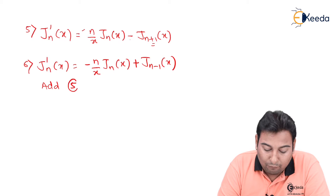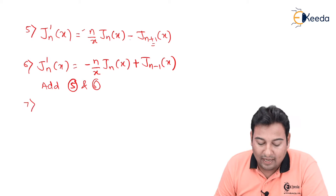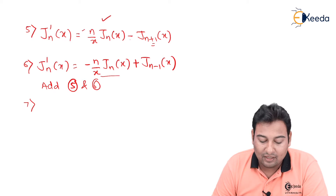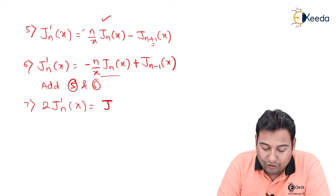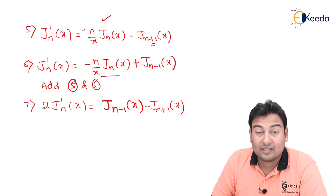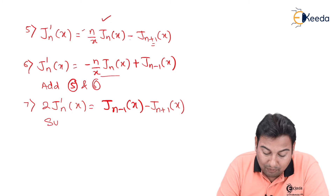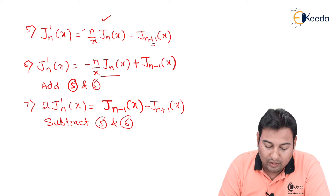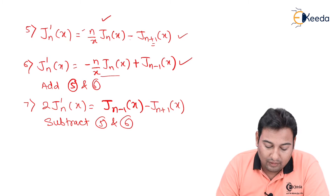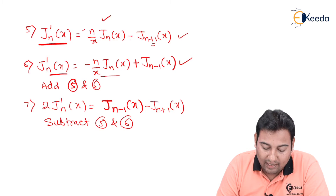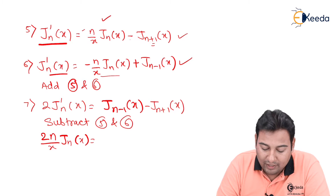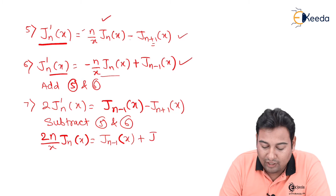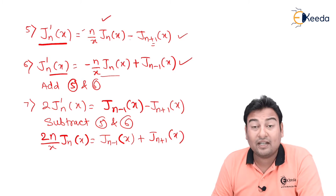Adding formulas 5 and 6: the (n/x)·J_n(x) terms cancel, giving the seventh formula: 2·J'_n(x) = J_{n−1}(x) − J_{n+1}(x). Subtracting formulas 5 and 6: the J'_n(x) terms cancel, giving the eighth formula: (2n/x)·J_n(x) = J_{n−1}(x) + J_{n+1}(x).